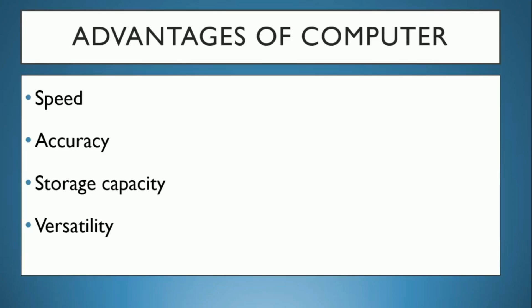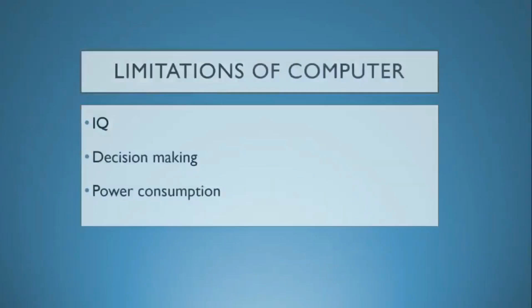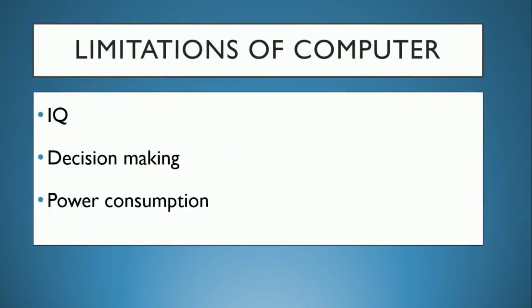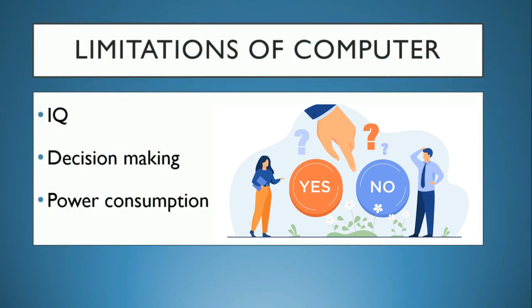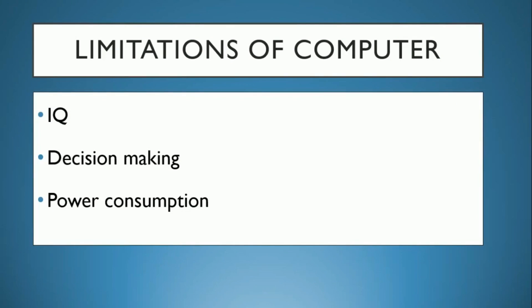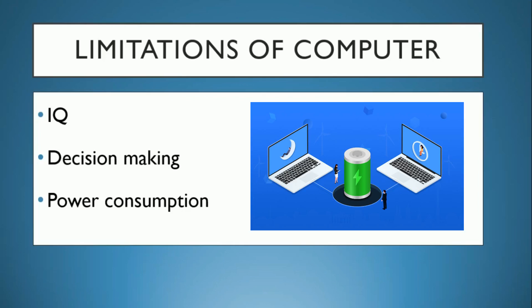Now the limitations of a computer. First, IQ — it doesn't have its own IQ. It works only on the commands given by us. Decision making — it cannot decide anything by itself; it works robotically on the commands given by us. Power consumption — it consumes electricity, so that is also a limitation.